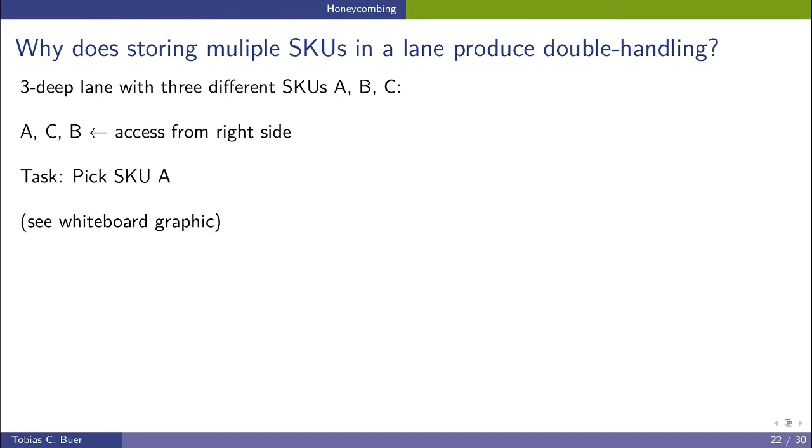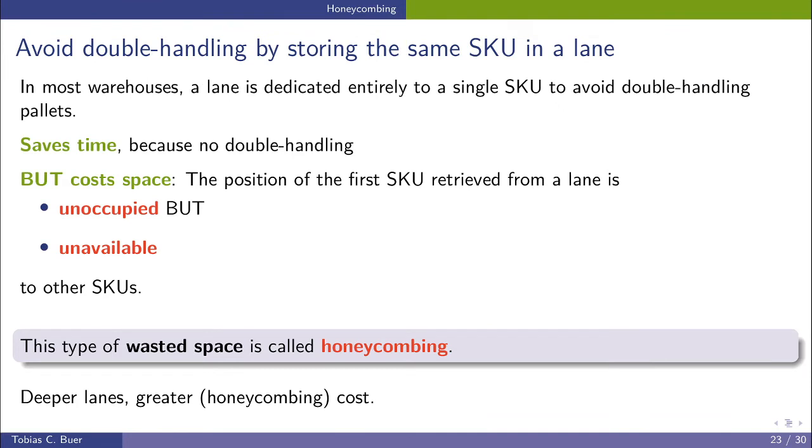This is a typical way of operating such a warehouse. So we avoid double handling by storing the same SKU in a lane. And therefore we can save a lot of time by storing the same SKU in a lane because we avoid this double handling.